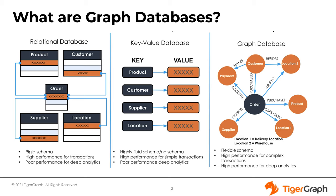Our brains don't separate things into different spreadsheets of data. We have all of this data that's interconnected in ways that make sense to us. Graph is a way of allowing us to make sense out of our data through these connections with other pieces of data.